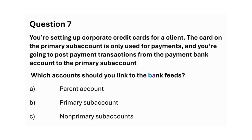You're setting up corporate credit cards for a client. The card on the primary subaccount is only used for payments, and you're going to post payment transactions from the payment bank account to the primary subaccount. Which accounts should you link to the bank feeds? A. Parent account. B. Primary subaccount. C. Non-primary subaccounts. Answer: Option B — Primary subaccount.